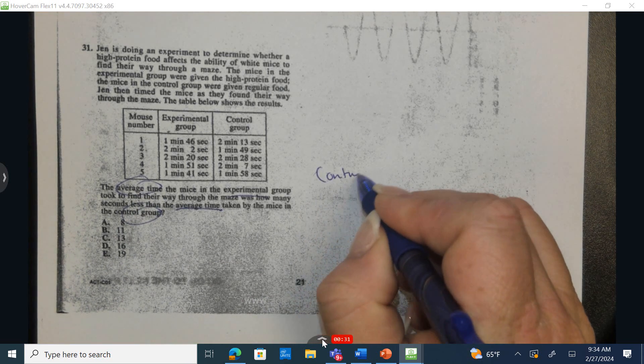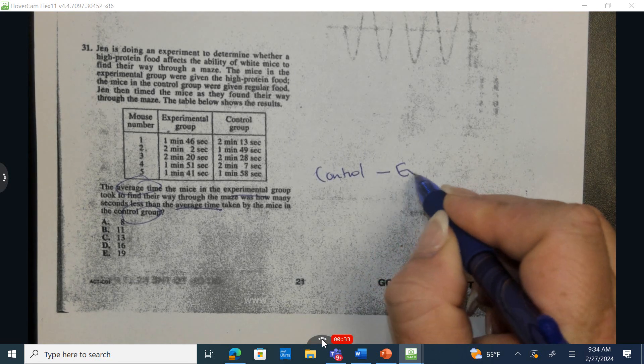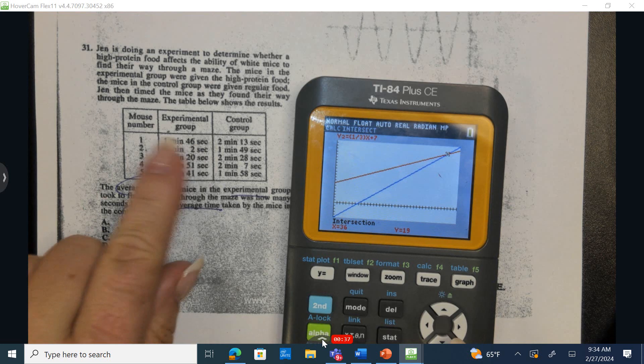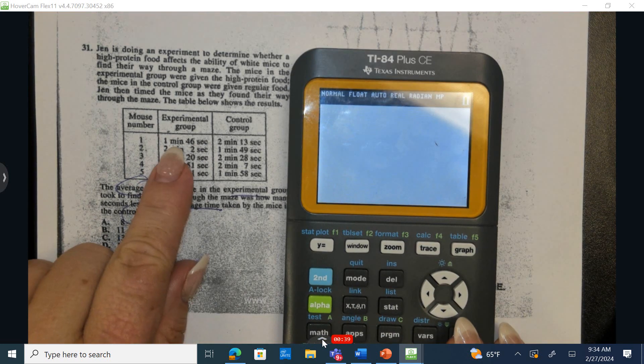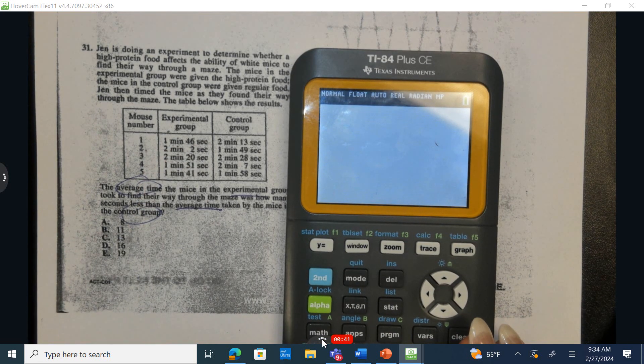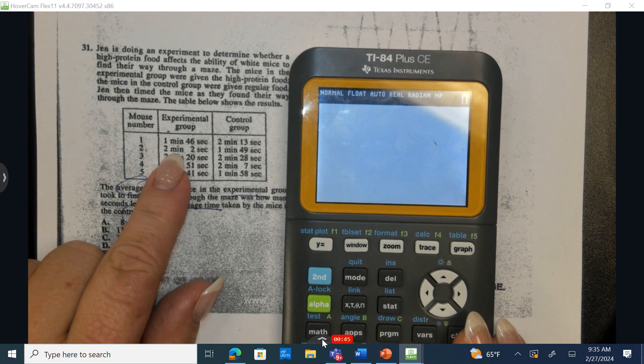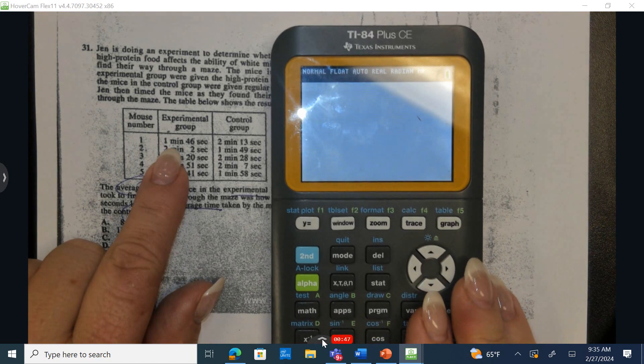So it's going to be the control group, and we're going to subtract the experimental group. How do we figure out the average considering that we have two different rates? Well, one minute is equivalent to 60 seconds, just like two minutes is two groups of 60, or 120 seconds. So let's add this up quickly.